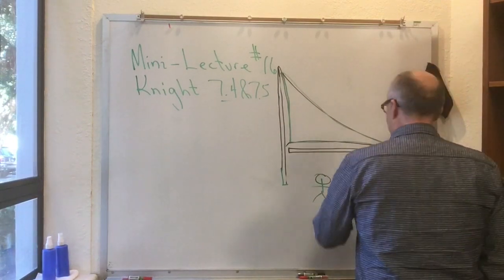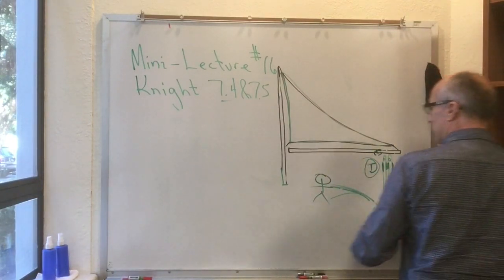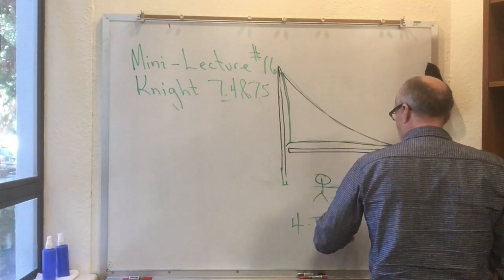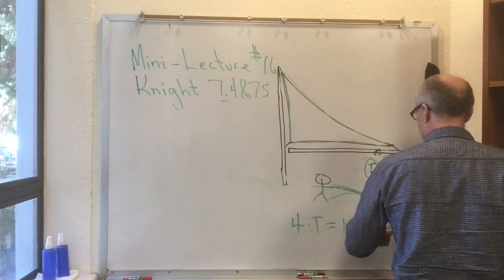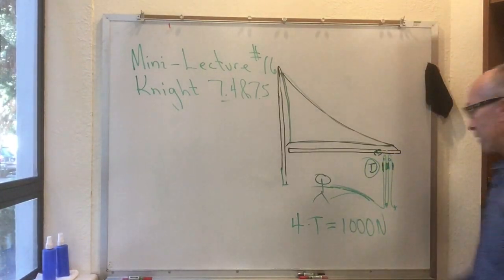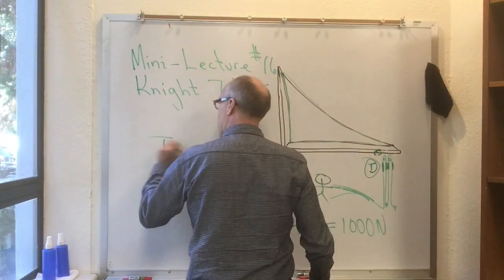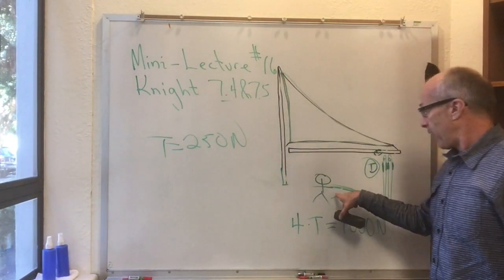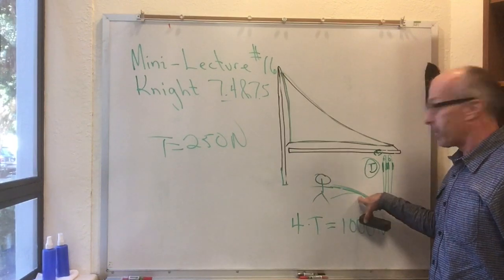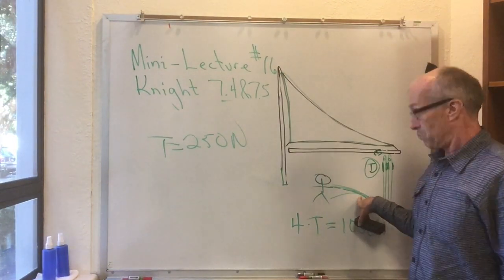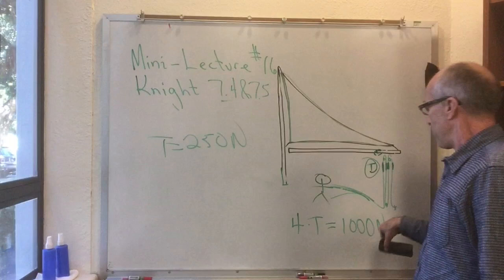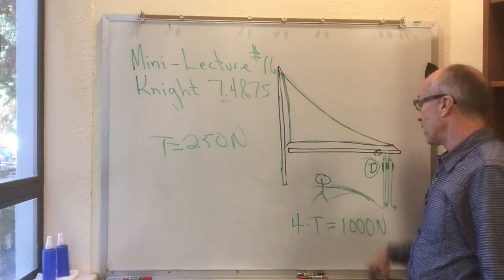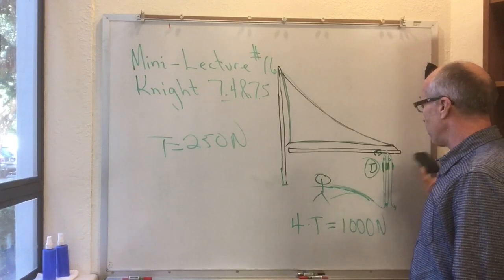So, if I need to generate 1,000 newtons total, that means that I have four times T is equal to 1,000 newtons. In other words, T is equal to 250 newtons. In other words, I don't have to be a superhuman to pull on this, with 250 newtons is a doable amount, in order to generate 1,000 newtons of pull here.